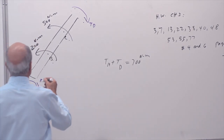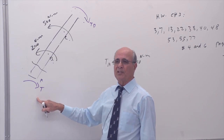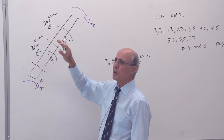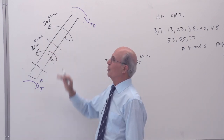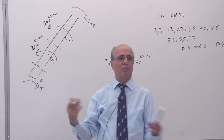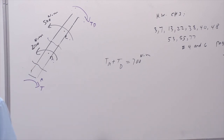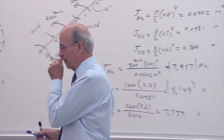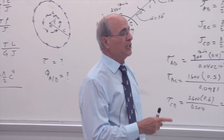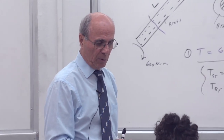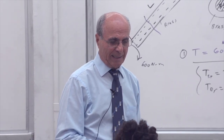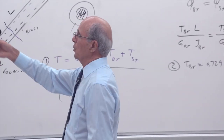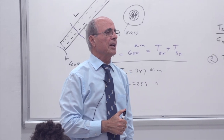The internal torque in the first segment is T_A; in the second it's T_A minus 200 (going the other way); in the third it's 700 minus T_A. Setting the total phi equal to zero and solving gives you T_A. This is the same indeterminate approach from chapter 1 — you just change sigma to tau and delta to phi. The only thing new in this chapter is the gear system.